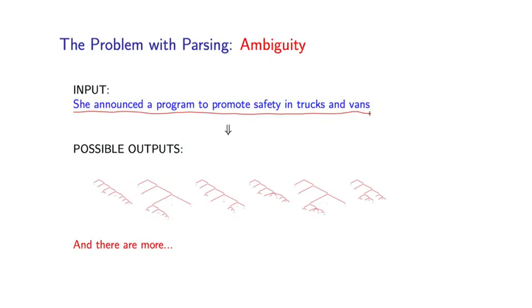So let me give you an example of just a couple. So she's announcing a program to promote safety in trucks and vans. So you have safety first in trucks and secondly in vans. These two things are coordinated together. We have trucks and vans together.